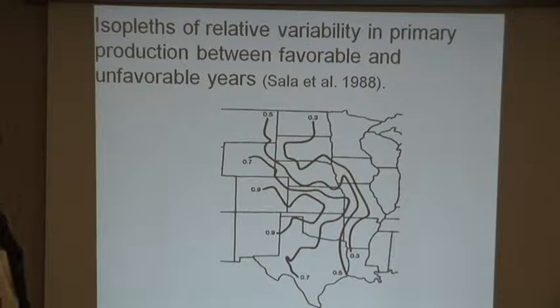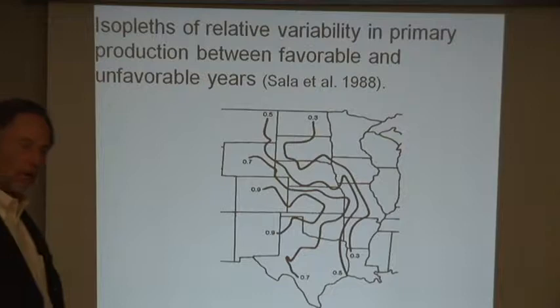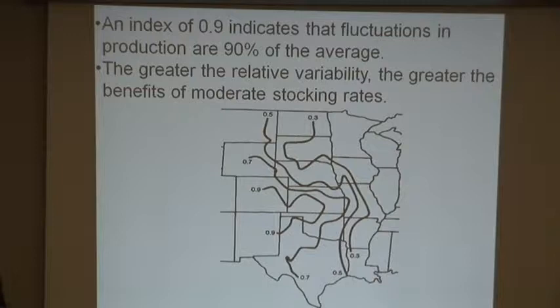That's the Dust Bowl area. Over the eastern part, the lowest three tenths doesn't even come through at all. So that tells us we've got quite a bit of variability. A point nine index indicates the fluctuations in production are 90% of the average, plus or minus - it just emphasizes that the Great Plains is highly variable.